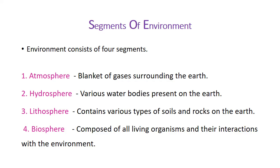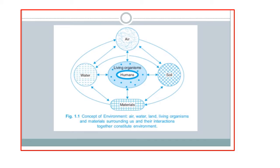Now, the segments of environment. There are four segments of environment. The first one is the atmosphere, which constitutes a blanket of gases surrounding the earth. Hydrosphere includes various water bodies present on the earth. Lithosphere contains various types of soils and rocks on the earth. Biosphere is composed of all living organisms and their interactions with the environment. This diagram shows hydrosphere, atmosphere, lithosphere and living organisms — materials meaning non-living organisms — and their interactions together as the environment.